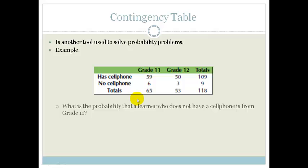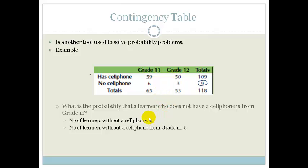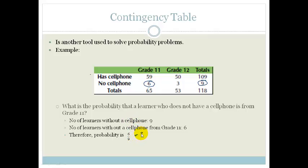The next question asks: what is the probability that a learner who does not have a cell phone is from grade 11? The total number of learners without a cell phone is 9. Of that 9, six are from grade 11. Therefore the probability that a learner without a cell phone is from grade 11 is 6 over 9, which is also equal to 2 over 3.